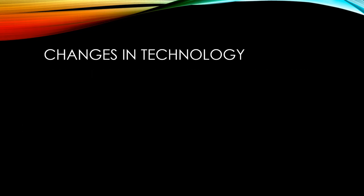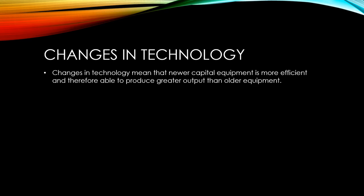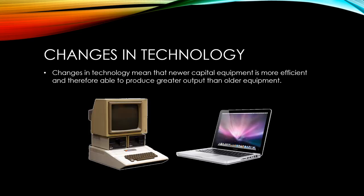Technology is always developing at a rapid pace. Changes in technology mean that newer capital equipment is more efficient and able to produce greater output than older equipment. For instance, the computers that were used in 1969 to send man to the moon were far less powerful than the computer you have in your mobile phone that you keep in your pocket.